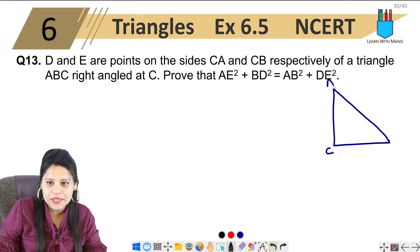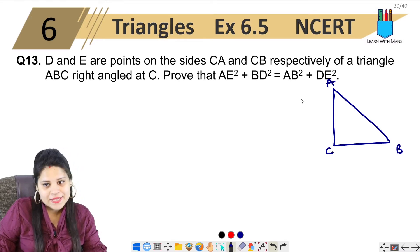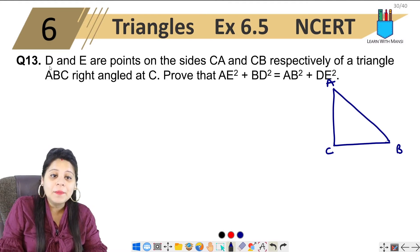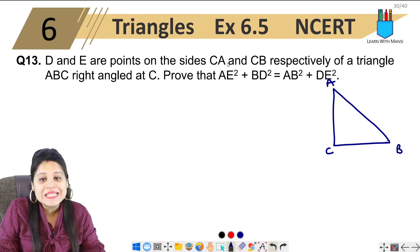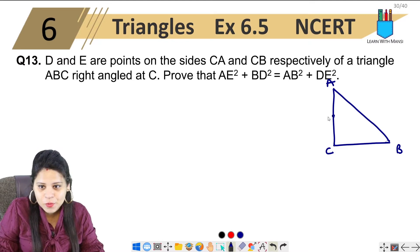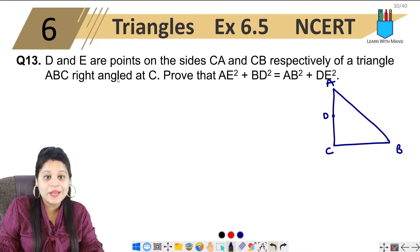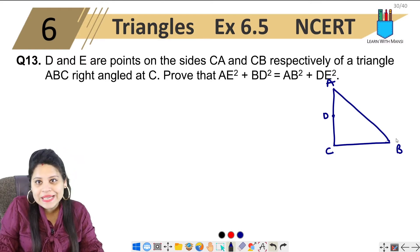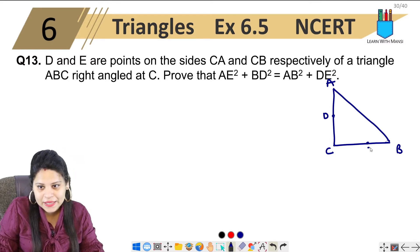So that means we name the vertices A, B, C. Now D and E are points on CA and CB. So CA has point D. Let's suppose here is point D.